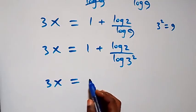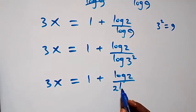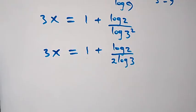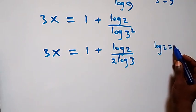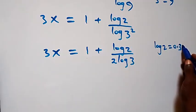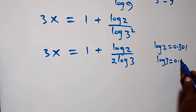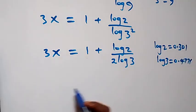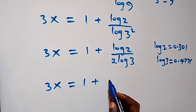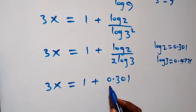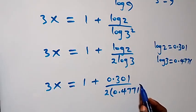Now equals to 1 plus log 2 over 2 log 3. We can substitute the values of log 2 and log 3. Log 2 is the same as 0.301 and log 3 is the same as 0.4771.